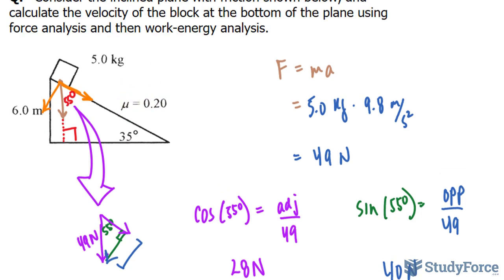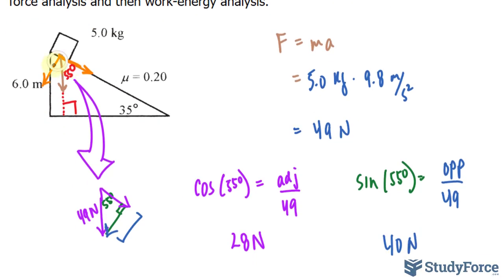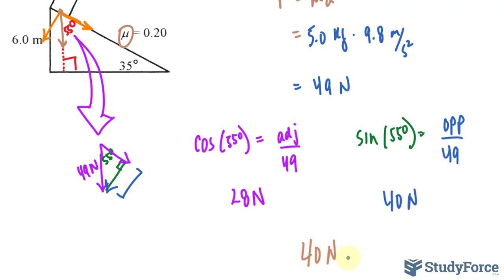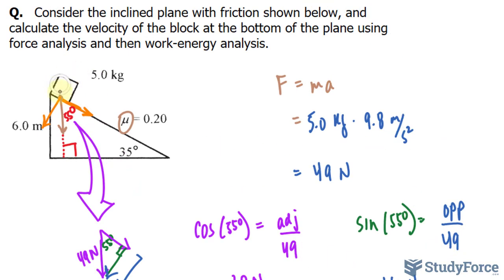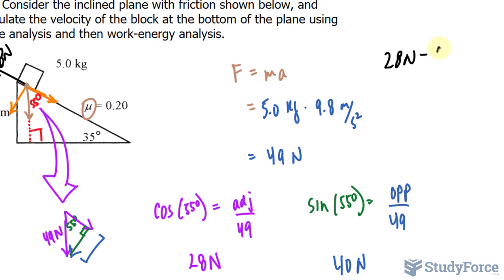We also have a coefficient of friction of 0.2, which slows down this mass — something it needs to overcome. To account for this, we take the perpendicular force of 40 newtons and multiply by mu, which is 0.2. That gives us 8 newtons of friction force, acting in the opposite direction. Subtracting 8 newtons from the 28 newtons along the plane leaves us with a net force of 20 newtons going down the incline.